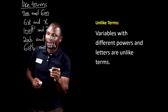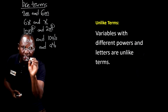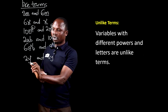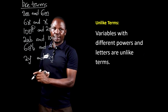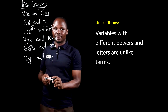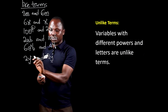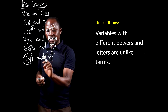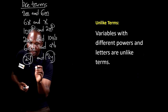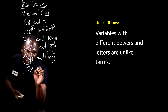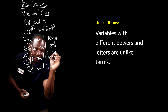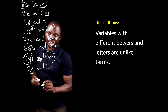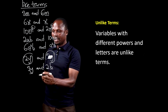For example, if we have 2y squared and 3y, they are unlike terms because even though the variables are the same, the power of the first one is 2 and the power of the second one is 1. Since the powers of the variables are not the same, the terms 2y squared and 3y are unlike terms. If we have 3y and 2b, they are also unlike terms because the variables are not the same, even though they have the same powers.